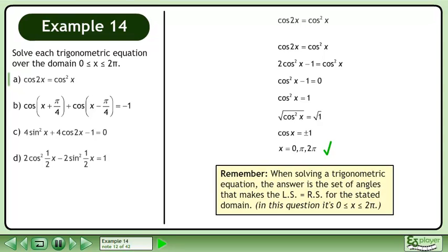Remember, when solving a trigonometric equation, the answer is a set of angles that makes the left side equal the right side for the stated domain. In this question, x is between 0 and 2π.